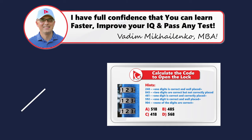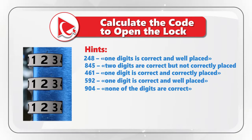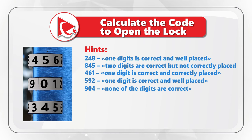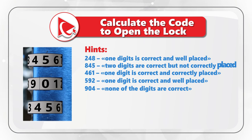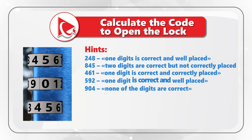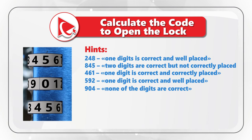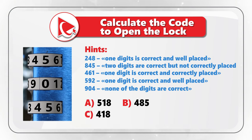Here is a challenging problem that will boost your cognitive abilities. You are presented with five hints, and using these hints, you need to unlock the code and open the lock. The hints are: in digits 248, only one digit is correct and well placed; in digits 845, two digits are correct but not correctly placed; in digits 461, only one digit is correct and correctly placed; in digits 592, only one digit is correct and well placed; and in digits 904, none of the digits are correct. You need to select one out of four choices: A — 518, B — 485, C — 418, D — 568.